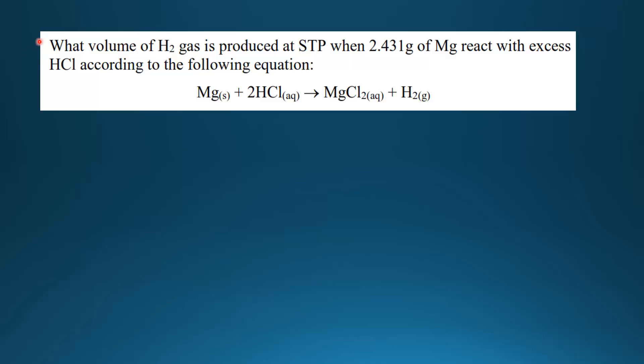Next we'll try an example using the molar volume of a gas. The question is: what volume of hydrogen gas is produced at STP when 2.431 grams of magnesium react with excess hydrochloric acid according to the following equation? The equation is magnesium reacting with hydrochloric acid to form magnesium chloride and hydrogen gas.